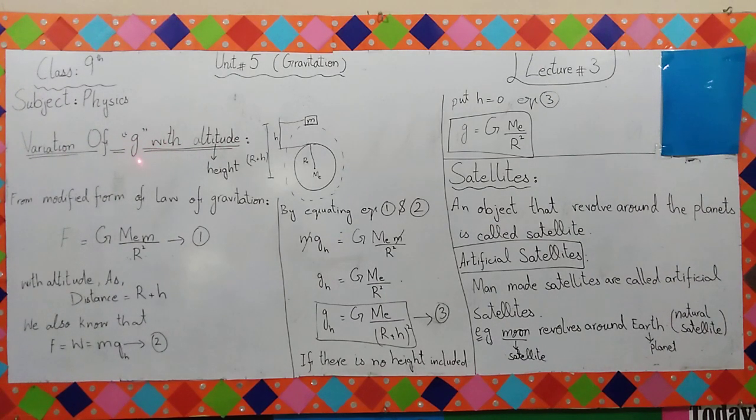You have G, which is the gravitational acceleration. You have to check the variation with altitude, which means height. Altitude means height.